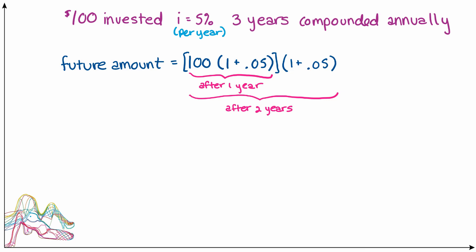And of course after three years we'd have the amount that we have after two years, again now that amount earning interest, therefore we'd have to multiply the two year amount by 1 plus the interest rate of 0.05 one last time.